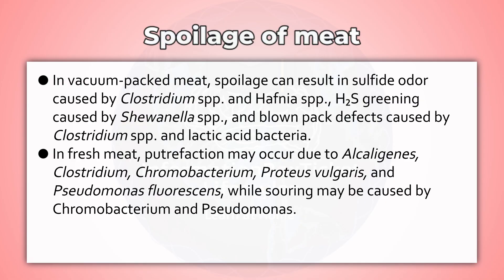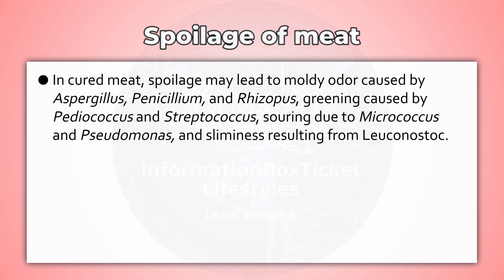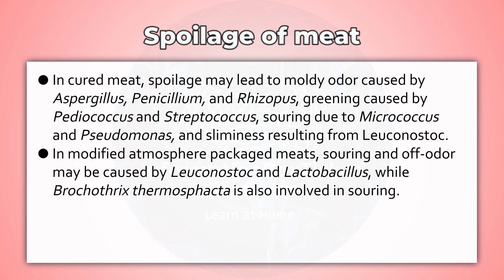In fresh meat, putrefaction may occur due to Alkaligenes, Clostridium, Chromobacterium, Proteus vulgaris, and Pseudomonas fluorescens, while souring may be caused by Chromobacterium and Pseudomonas. In cured meat, spoilage may lead to moldy odor caused by Aspergillus, Penicillium, and Rhizopus; greening caused by Pediococcus and Streptococcus; souring due to Micrococcus and Pseudomonas; and sliminess resulting from Leuconostoc.